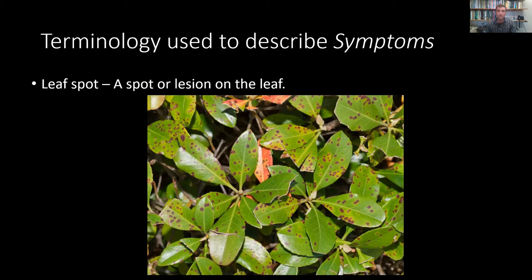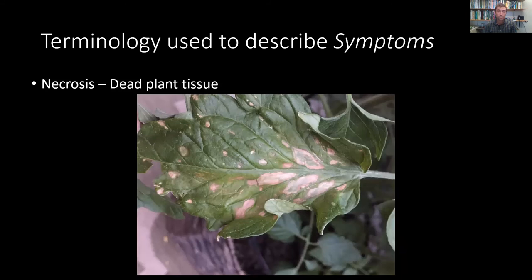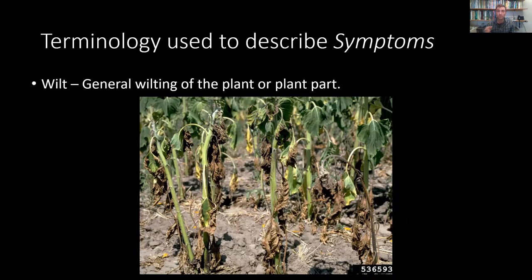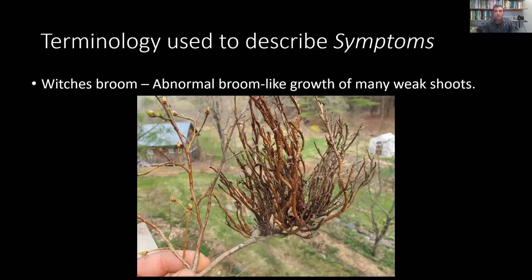Necrosis is basically any dead plant tissue — it's included in dieback and in blight, but the general term necrosis refers to any dead plant tissue. Chlorosis and necrosis and how they are arranged in patterns can be clues to tell us things. Plants can also wilt — a general wilting of the plant or a plant part is something to watch for. Wilting could be caused by overwatering or underwatering, heat stress, or it could be the symptom of a disease-causing agent or pest that has inflicted damage, maybe even below the soil.